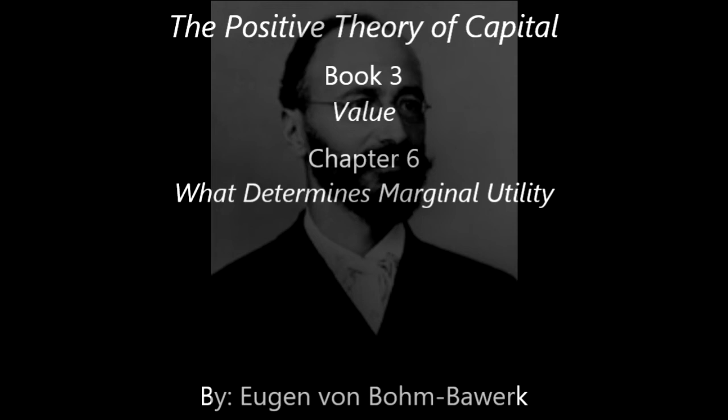First, since the relations of wants and provision among individuals are extremely various, one and the same good may possess an entirely distinct subjective value for different persons — without which, indeed, it is difficult to see how there could be any exchanging at all. And thus, second, under otherwise similar circumstances, the same quantities of goods have a different value to rich and poor.